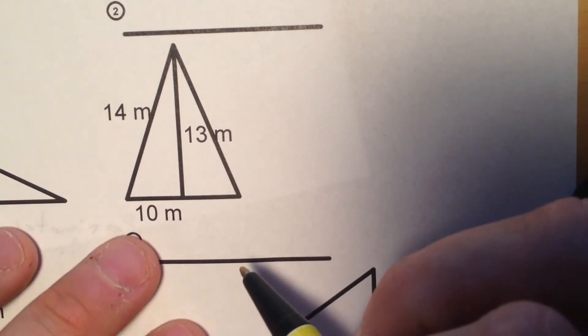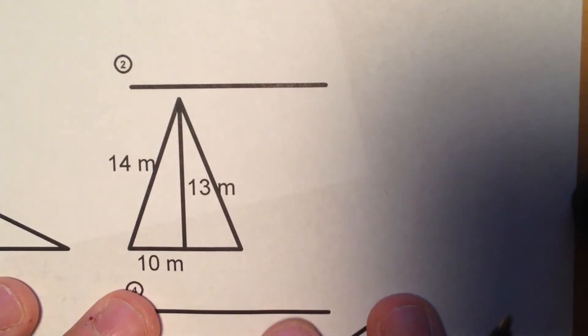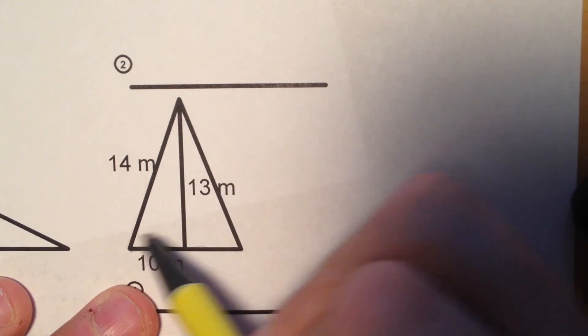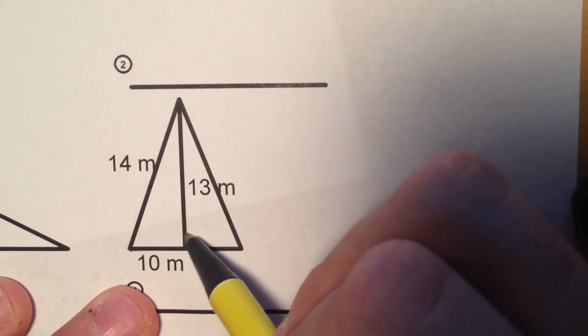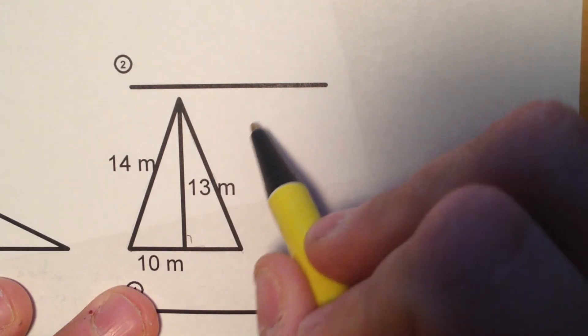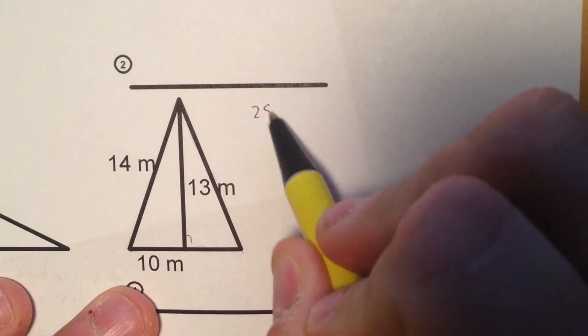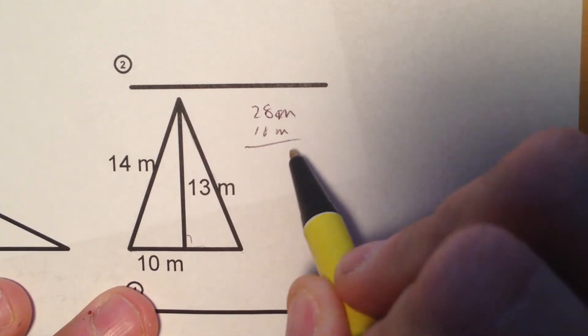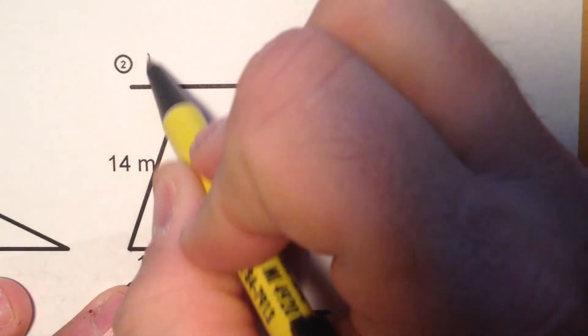So the perimeter: I have 10 by 14, and it looks like an isosceles so I'm going to say 14 on this side also. So that's 28 meters plus the 10 meters, that's going to give me 38 meters. So the perimeter is 38 meters.